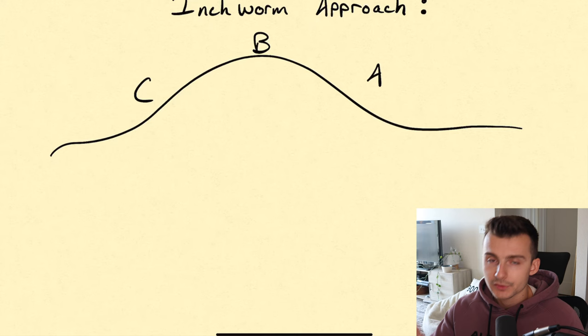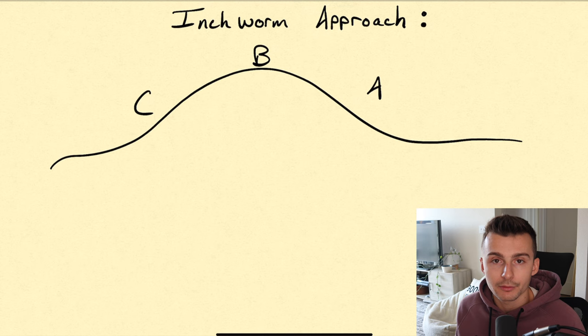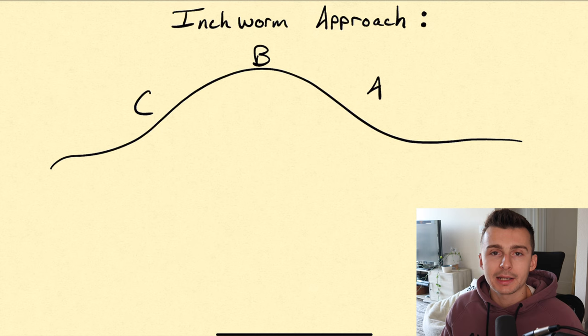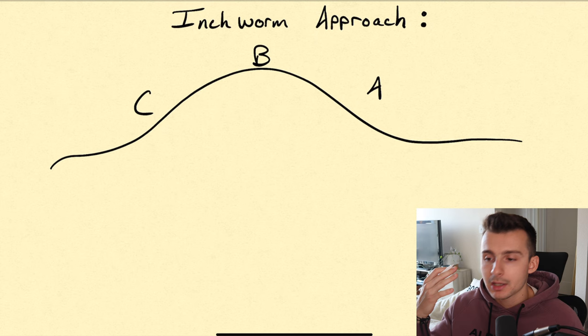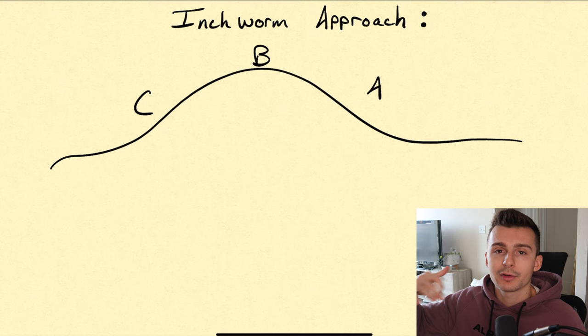The inchworm approach looks like a bell curve. What Jared Tendler talks about is that you have three operating systems when it comes to your trading: your C game, your B game, and your A game. The A game is obviously you're doing good — stuff's working, you're following your plans, leading to profitable trades and consistency. You want to spend more time up there.